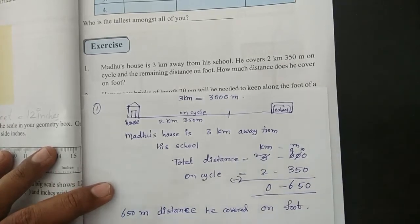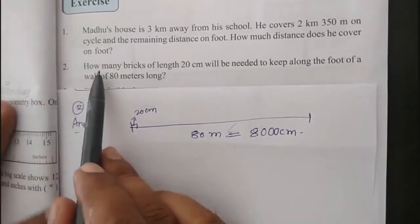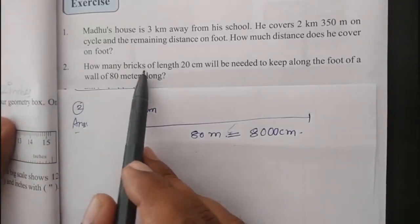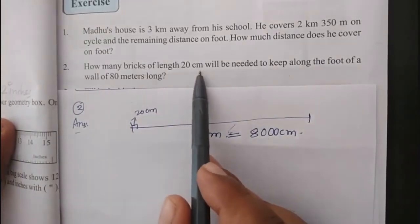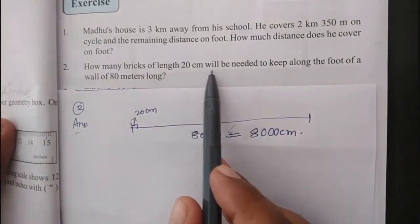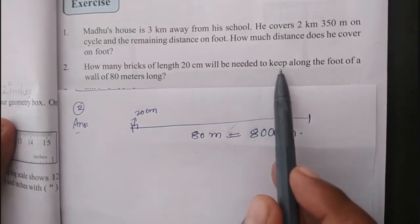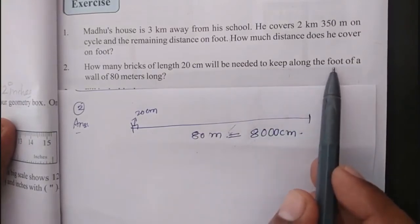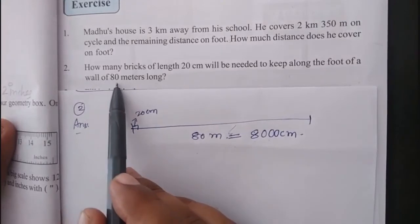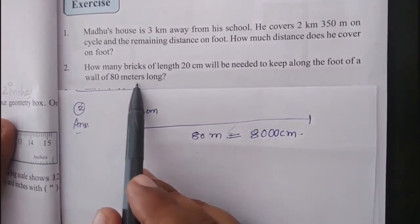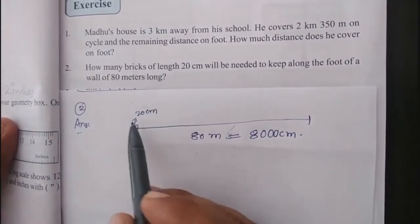So this is the first question. Second question: How many bricks of length 20 centimeters will be needed to keep along the foot of a wall 80 meters long?